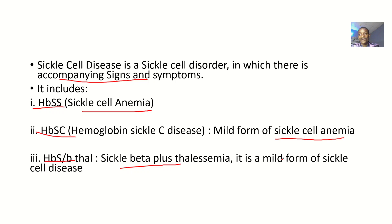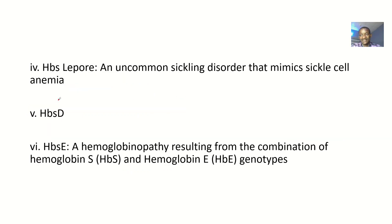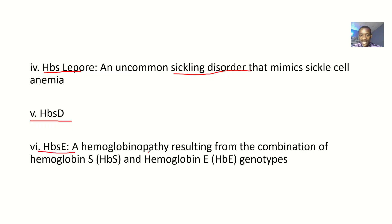So sickle cell disease is like a bigger version that contains everything. When you're talking about sickle cell anemia, you're simply talking about hemoglobin SS only — that's the difference. We still have other types: HbS lipor, which are uncommon sickling disorders that mimic sickle cell anemia; hemoglobin SD; and hemoglobin SE, a hemoglobinopathy resulting from the combination of hemoglobin S and hemoglobin E genotypes.